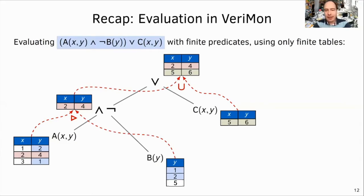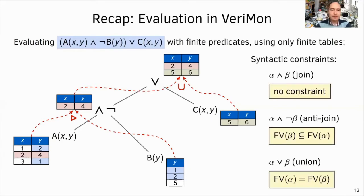We say that NOT BY is guarded by AXY, and we use the anti-join table operation in this case. The necessity to use finite tables and table operations induces a syntactic fragment that can be monitored. This fragment is defined under the following conditions. Conjunction uses a join, and it's unrestricted. The negation must be guarded by a conjunction with a finite table. The anti-join, which is used in this case, requires that columns of the negated formula, in this case beta, are contained in the formula that is part of the conjunction alpha. Disjunction uses table union, which requires that all table columns are the same. And similarly, one can write other constraints for other language constructs, depending on the specific semantics of these constructs.